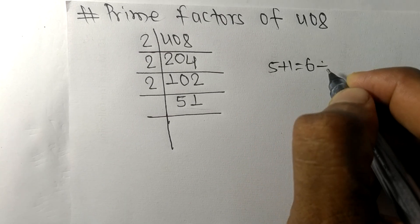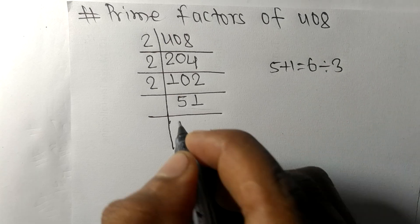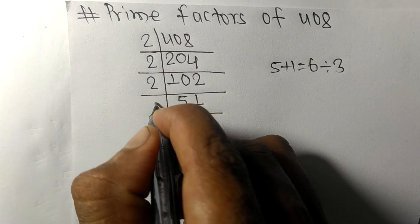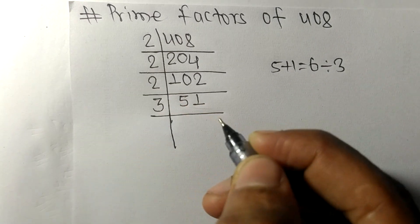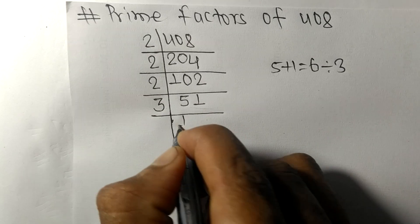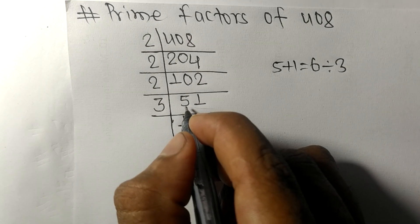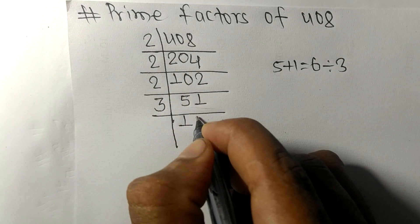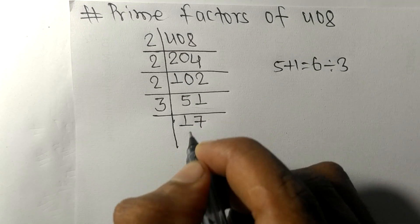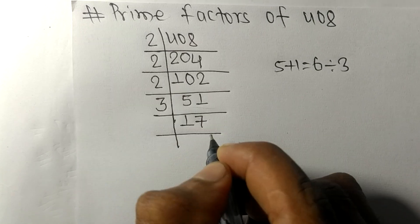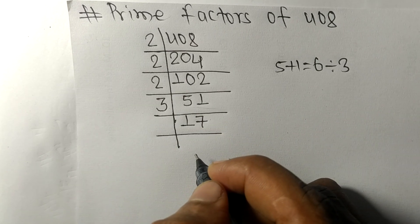3 times 1 means 3, remainder 2, so 21. 3 times 7 means 21. Now we got 17 which is our prime number, so it is divisible by 17 itself and we get here 1.